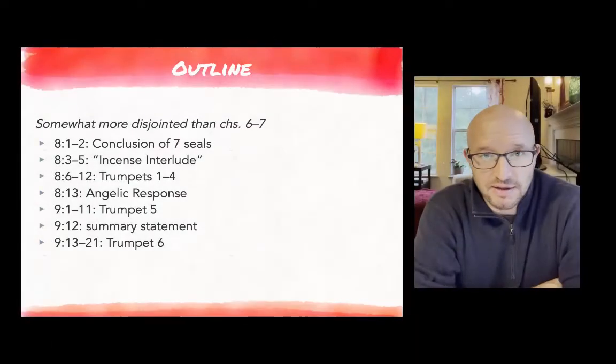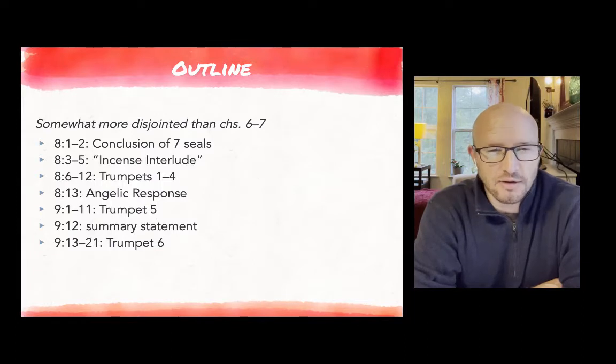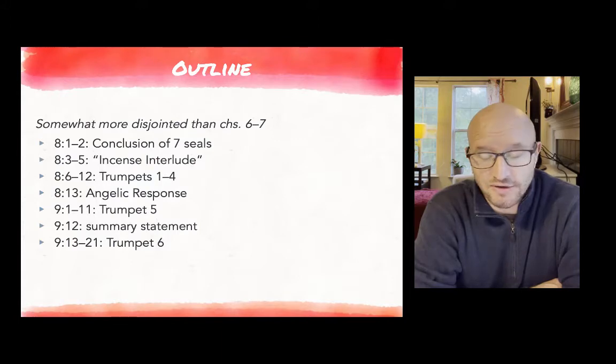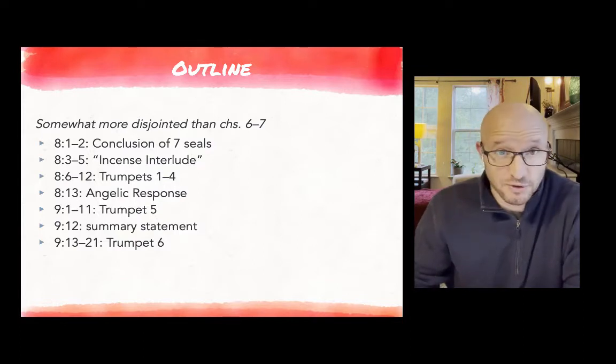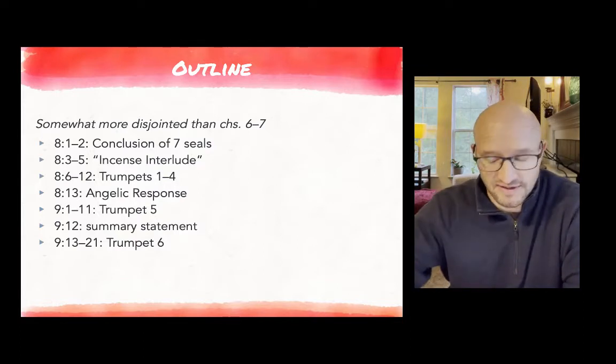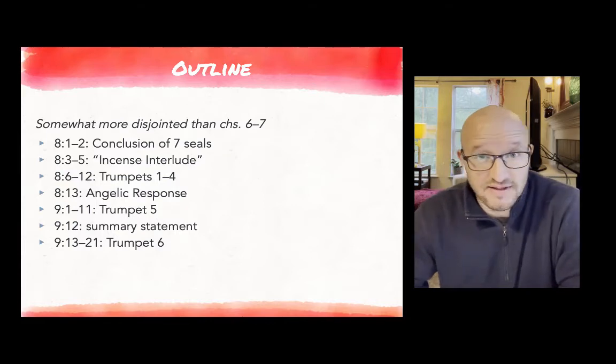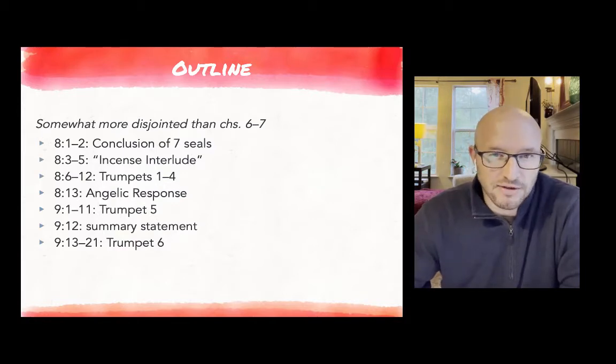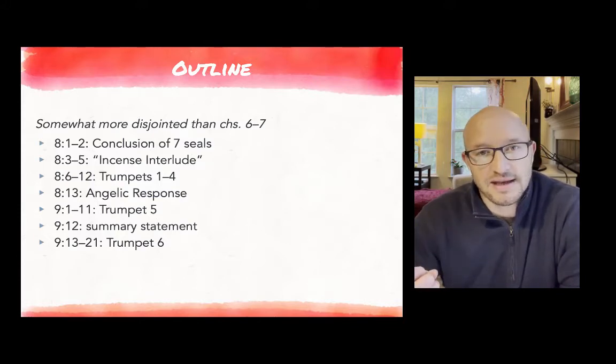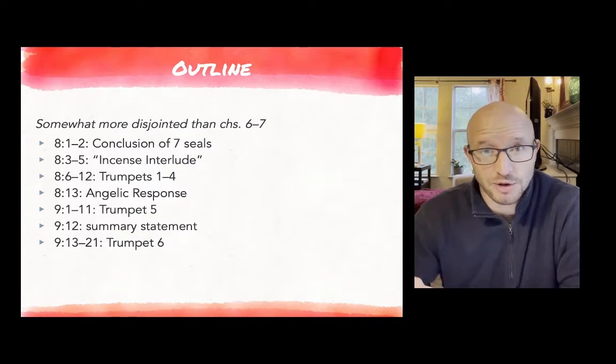So to begin, this part actually feels a little more disjointed in comparison to the opening of the seven seals in the previous chapter. In chapter 8 verses 1 through 2, these verses are really the ending, the conclusion of the seven seals. The seventh seal is opened and there's silence in heaven. In 8:3 and 5, there's almost another short interlude. We might call this the incense interlude because it focuses on the incense that would have probably been present in earthly worship but was also present in the heavenly throne room, and this incense represents the prayers of the people.